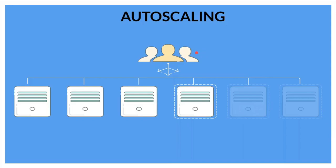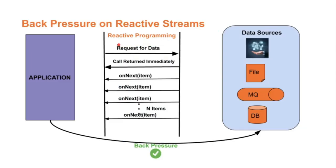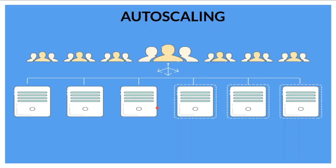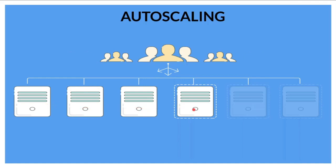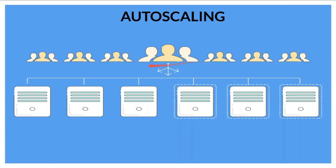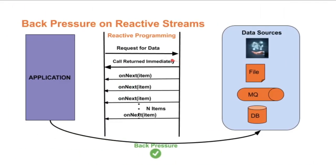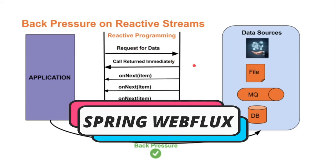Now we know the basic definition of back pressure, but how do we solve it? As far as I know, there are two solutions. One is auto scaling and the next one is reactive programming. Whenever requests are increasing on the server and back pressure is building, we can auto scale — we can increase the number of computers or servers to handle the load from users. This is one option to handle back pressure, and the second option is reactive programming.